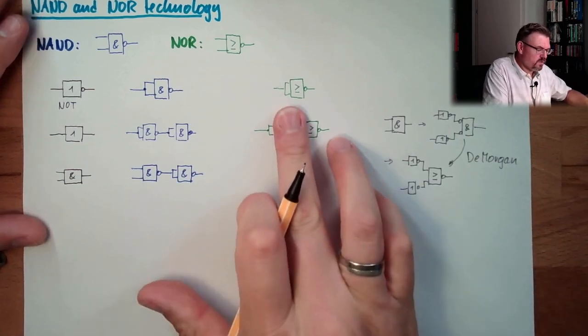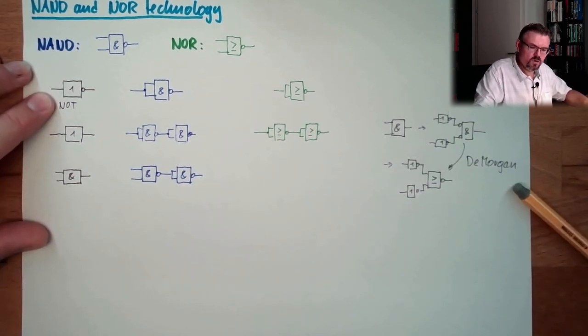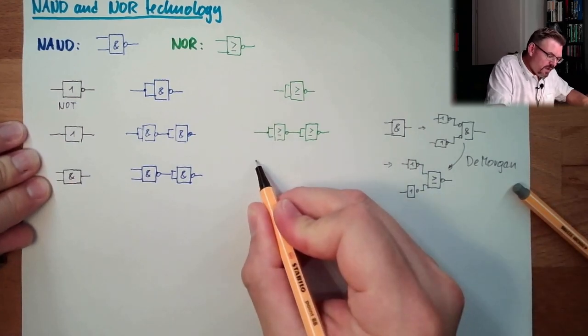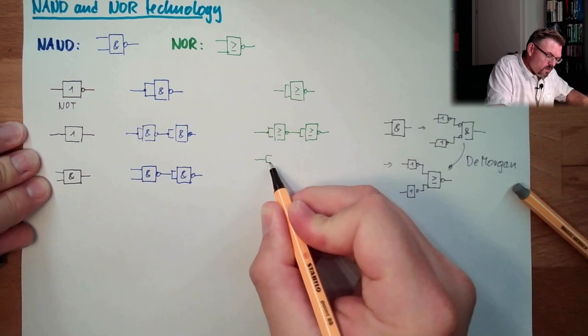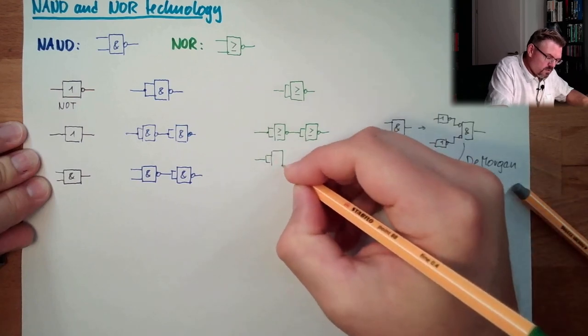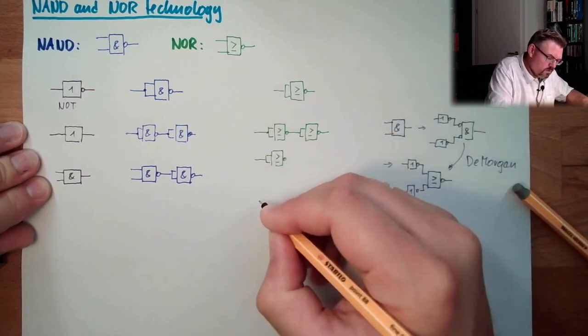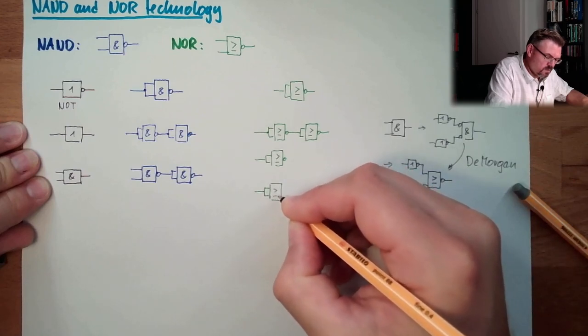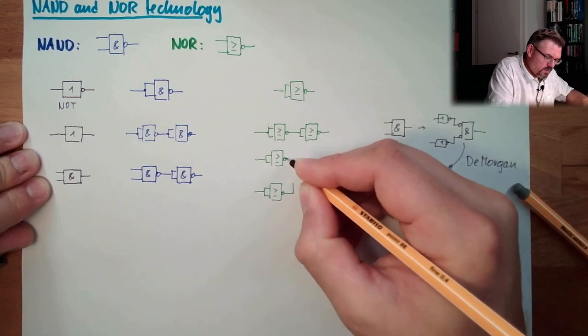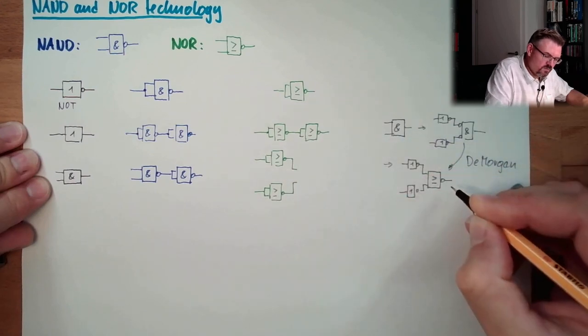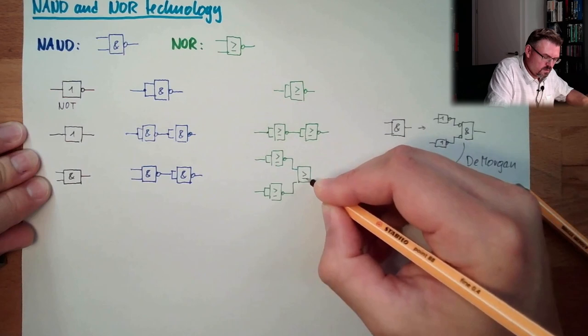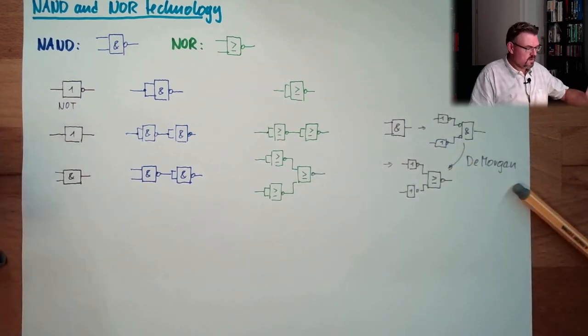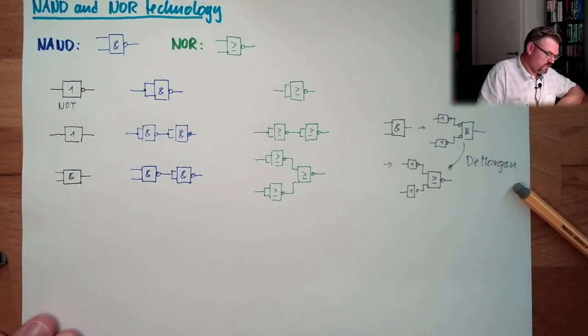And then, it's easy, because a NOT we already know. So, actually, an AND in NOR technology is looking like... NOT this input, NOT this input, and then we just have to add this NOR at the end. And we are done. Alright? So, also the AND we could manage, yeah?